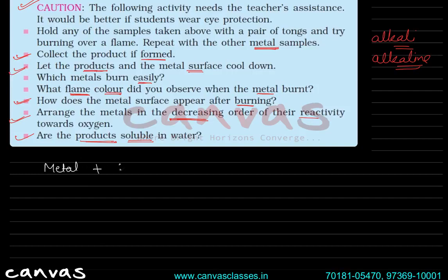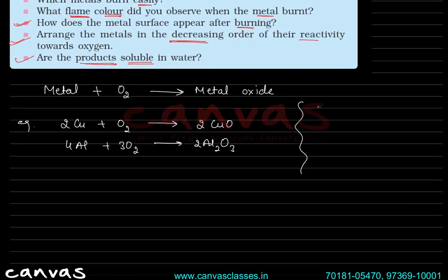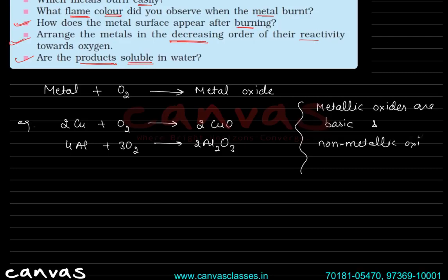When we represent these reactions: metal burned in the presence of O₂ forms metal oxide. For example, copper reacts with oxygen to form copper oxide (CuO). Similarly, aluminum reacts with oxygen to form aluminum oxide (Al₂O₃). We had studied in the acid-base chapter that metallic oxides are basic in nature.